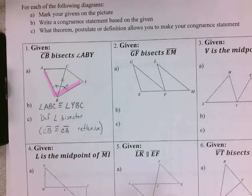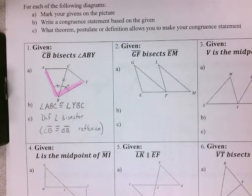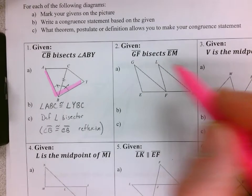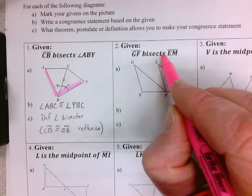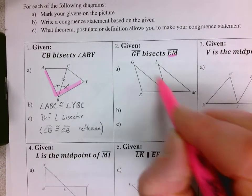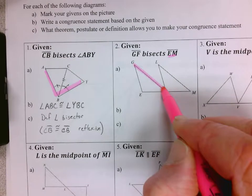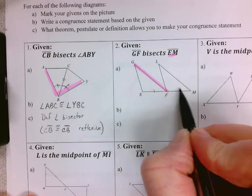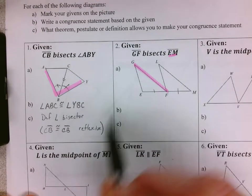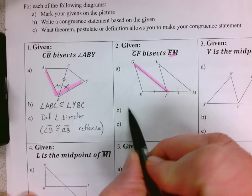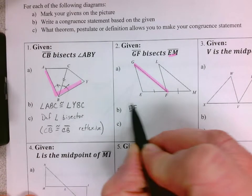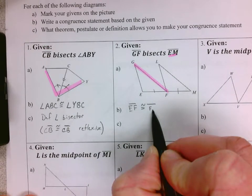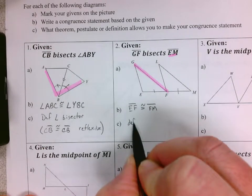Let's go to the next one. GF bisects EM. So this is a segment bisector. There is GF right there, and where that goes, it's gonna divide segment EM into congruent segments. So I'm gonna write that segment EF, notice I'm putting the segment sign, it's congruent to segment FM.